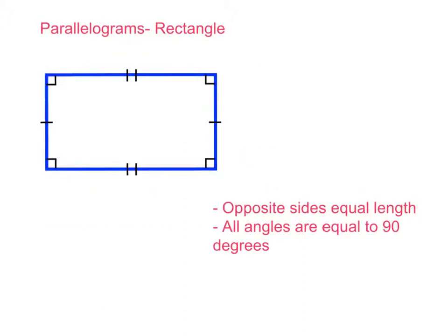The rectangle is a quadrilateral because it is a shape with four straight sides, and it's also a parallelogram because both pairs of opposite sides are parallel to one another. There are two properties. Opposite sides are equal in length, and all angles are equal to 90 degrees. Looking at our diagram, we use the same labelling we saw with triangles — right angle labelling and side labelling. The first property: opposite sides are equal in length. This side here and this side here are opposites and they're equal in length, as labelled.